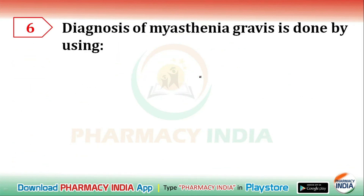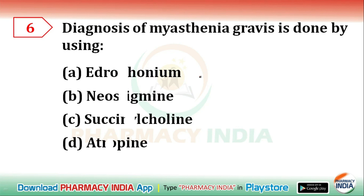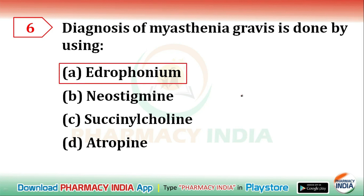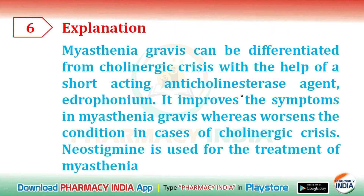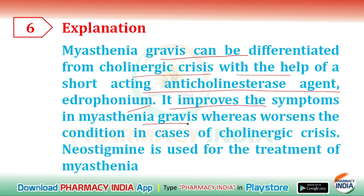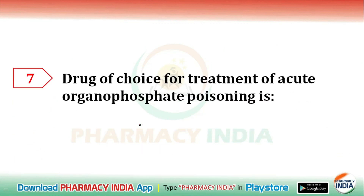Next question: the diagnosis of myasthenia gravis is done by using — edrophonium, neostigmine, succinylcholine, or atropine? The correct answer is edrophonium. Myasthenia gravis can be differentiated from cholinergic crisis using the short-acting anticholinesterase agent edrophonium, which improves symptoms in myasthenia gravis but worsens the condition in cholinergic crisis. Neostigmine is used for treatment of myasthenia gravis.